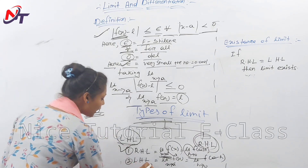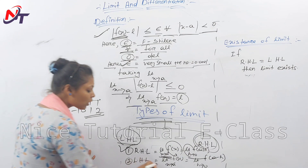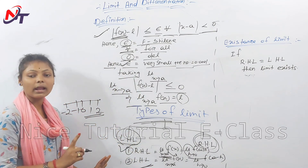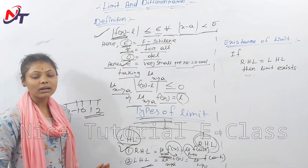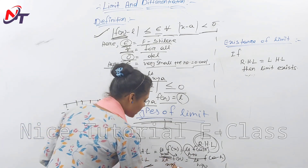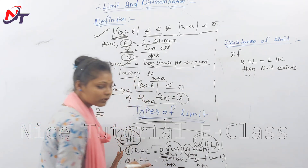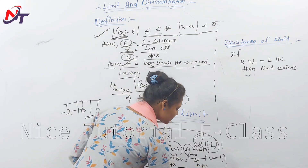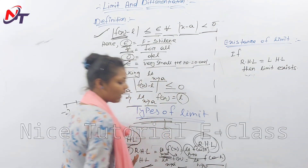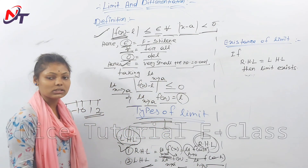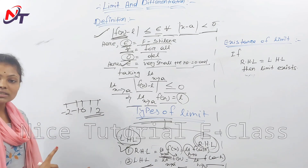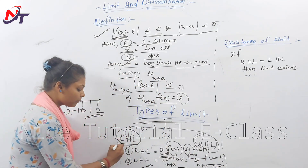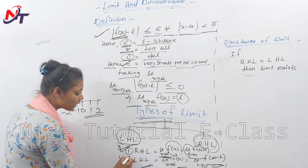The left-hand limit means: limit as x tends to a from the negative side, i.e., limit x → a−, of f(x). This is equivalent to limit as h tends to 0 of f(a − h), which is the left-hand side.